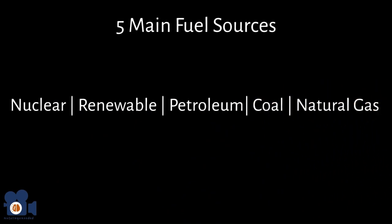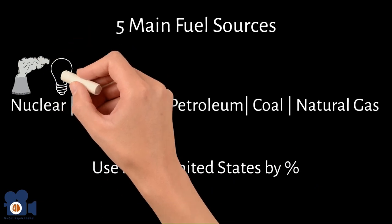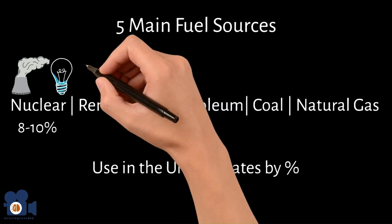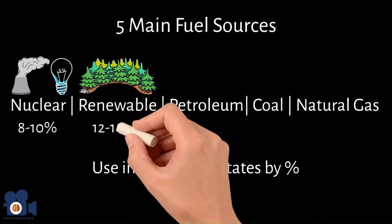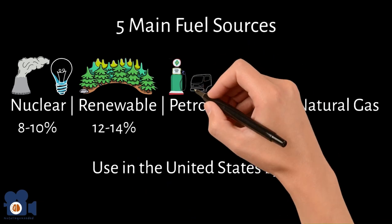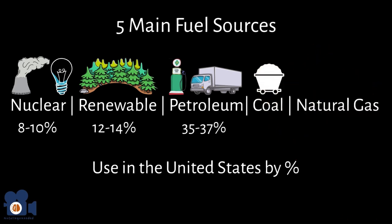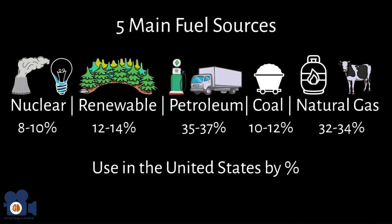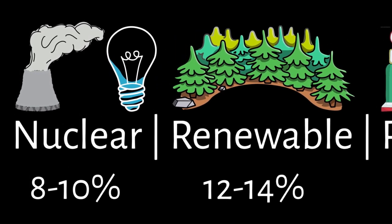There are five main sources of fuels that humans use for energy: nuclear, renewable, petroleum, coal, and natural gas. Looking at rough estimates of their use in the United States — nuclear energy (almost exclusively for electric power) accounts for about 8–10%; renewable energy (biomass, hydroelectric, wind, solar, and geothermal) contributes 12–14%; petroleum (mainly for transportation) accounts for approximately 35–37%; coal (mainly for electricity generation) accounts for about 10–12%; and natural gas (for heating and power generation) accounts for about 32–34%. Each of these will be covered more in depth in upcoming units.